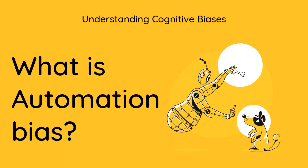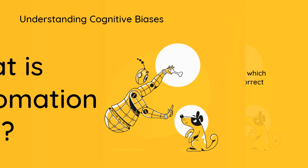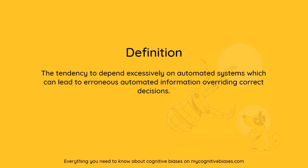What is automation bias? It is the tendency to depend excessively on automated systems, which can lead to erroneous automated information overriding correct decisions.